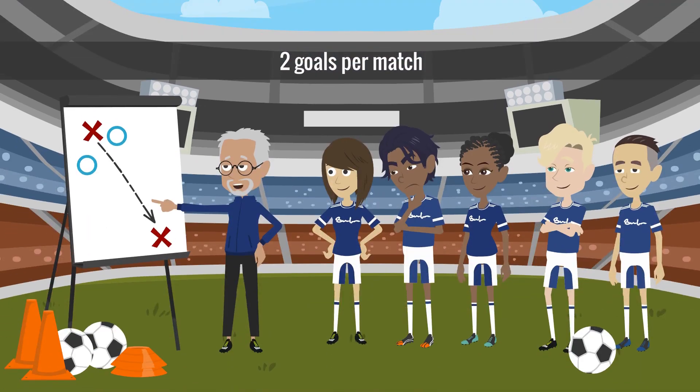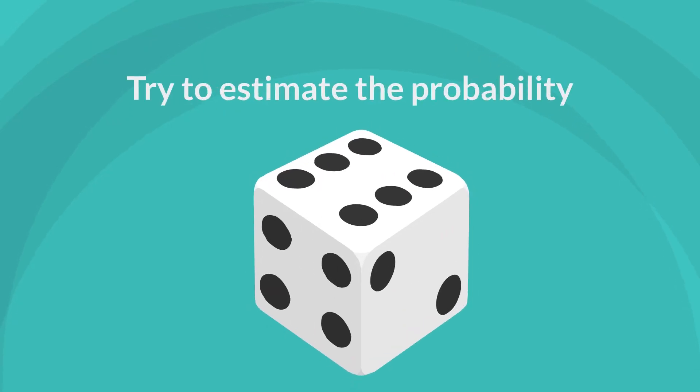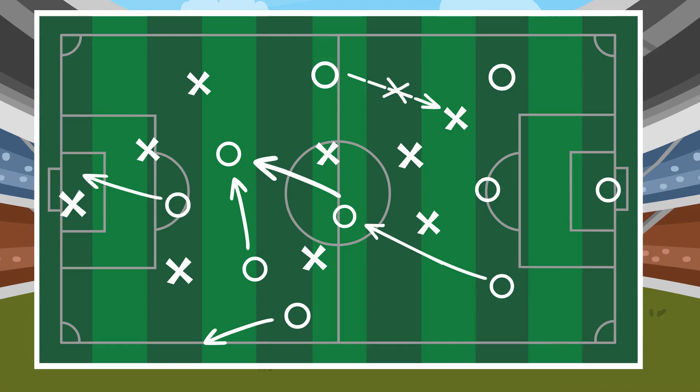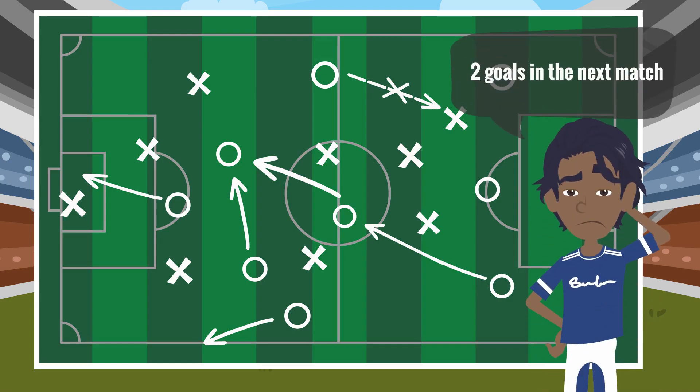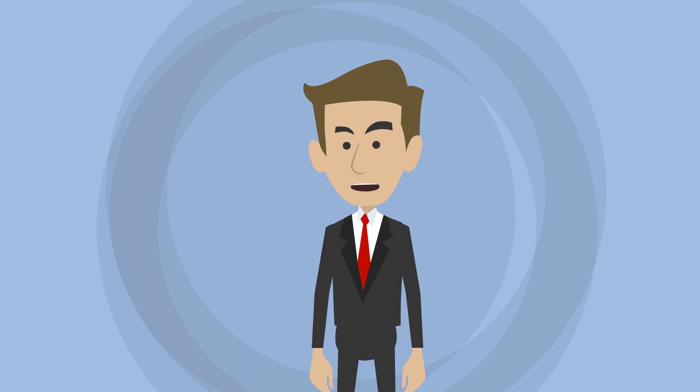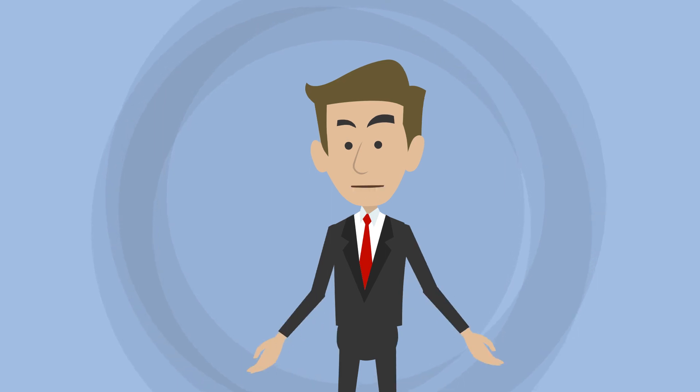Imagine you have a team that scores on average two goals per match. Try to estimate the probability of the team to score exactly two goals in the next match. Please meditate on this for a minute and pause the video if necessary.